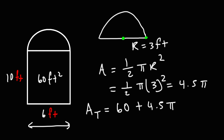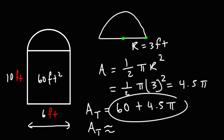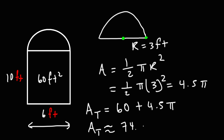That is the exact answer, but if you want to get a rounded answer, you can plug this into your calculator and replace pi with 3.14159. So we get an approximate area of 74.137 square feet. That's going to be the total area of this particular figure.